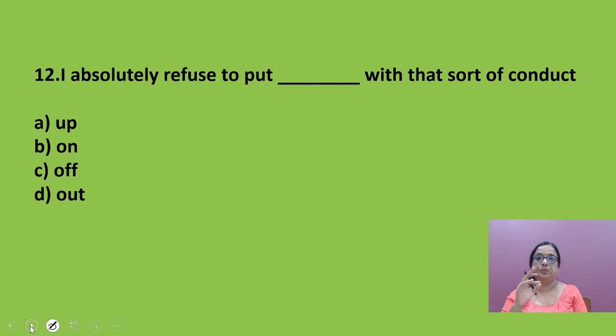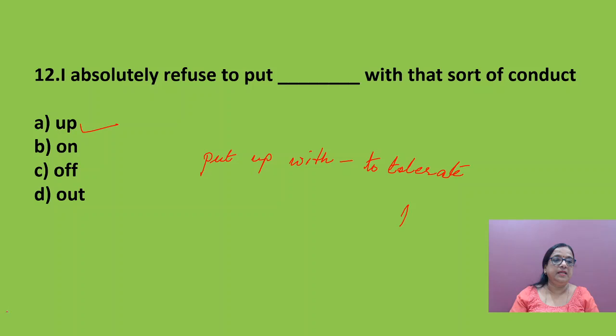I absolutely refuse to put blank with that sort of conduct. Here again, phrasal verb. I absolutely refuse to put up with. Now, what is the meaning of put up with? That means to put up with is to tolerate. When you cannot, to tolerate. The meaning of put up with is to tolerate.